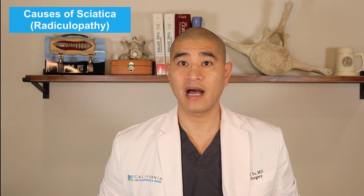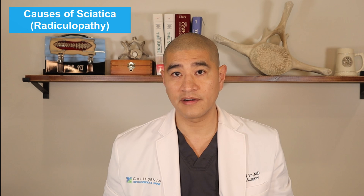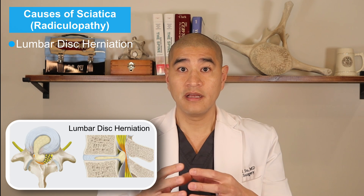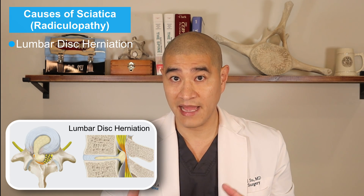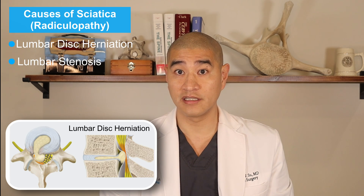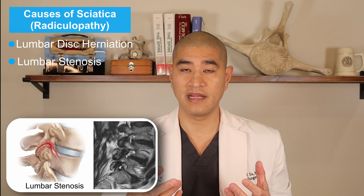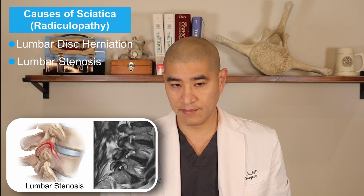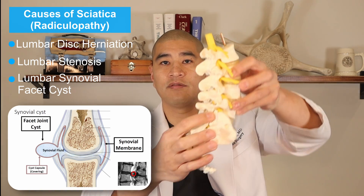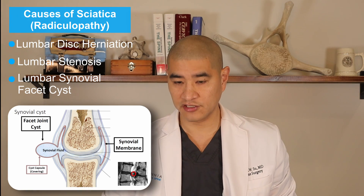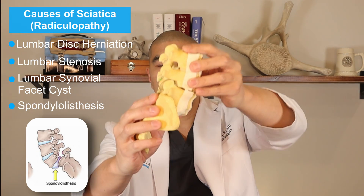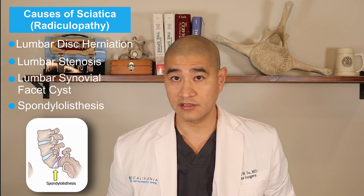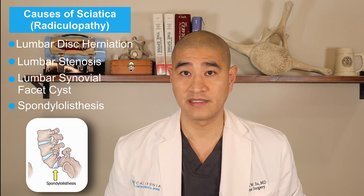Let's review the most common causes of sciatica or radiculopathy, all covered in different videos on this channel. Lumbar disc herniation is when there's a tear in the disc — the jelly spits out and hits a nerve, causing buttock and leg pain. Lumbar stenosis is a bone spur either in the center of the canal or pinching the nerve as it exits, also causing buttock and leg pain. There's also lumbar synovial facet cyst, a cyst that comes off of the joint and can pinch a nerve. Lastly, spondylolisthesis is the abnormal shifting of one vertebra on top of another — from arthritis or fracture — which can pinch a nerve at that level.